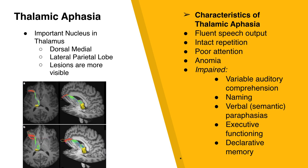It is common to see agnosia in patients with thalamic aphasia. While SLPs do not treat agnosia, it is important to note the difference between agnosia and anomia. If you present a picture of a quarter and the patient cannot recall its name but still recognizes it, that is anomia. If the individual feels the quarter and cannot tell what it is, that is agnosia. Common characteristics of thalamic aphasia include fluent speech output, poor attention, anomia (but most likely not severe), impaired variable auditory comprehension, some semantic paraphasias, and declarative memory deficits.